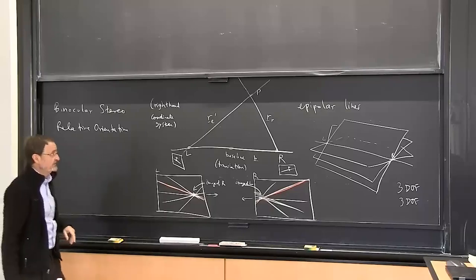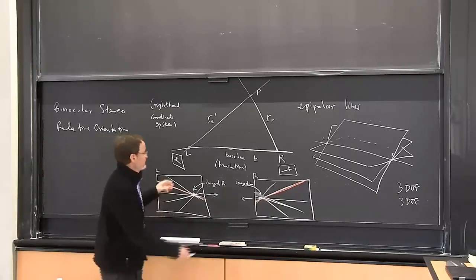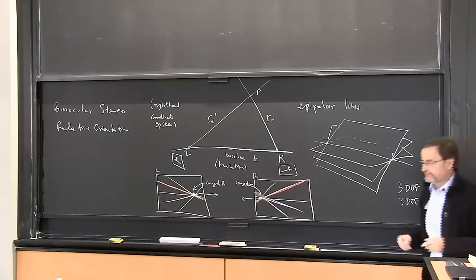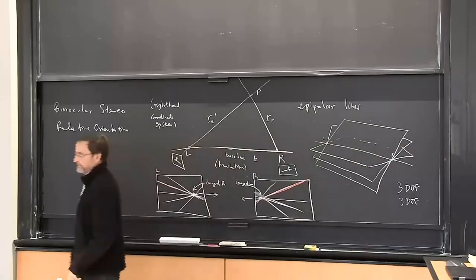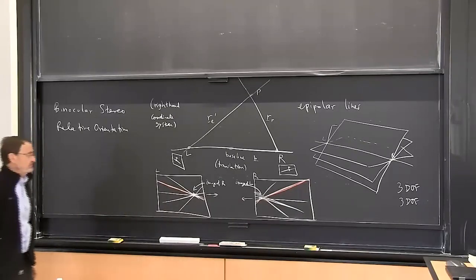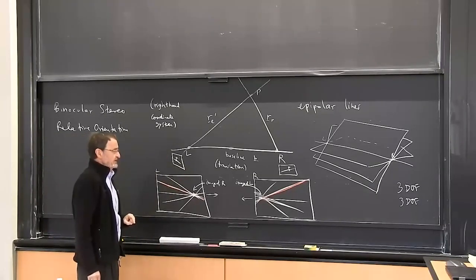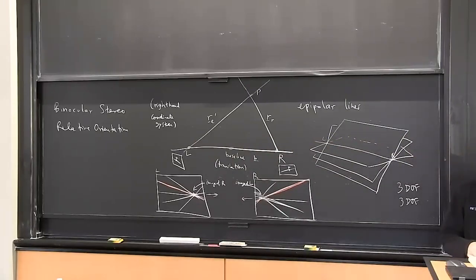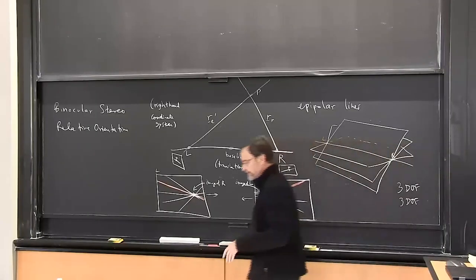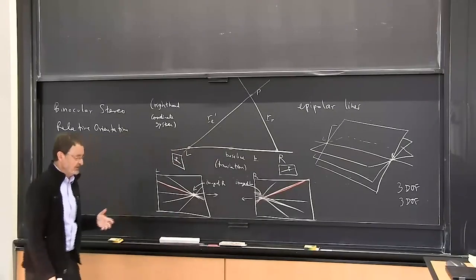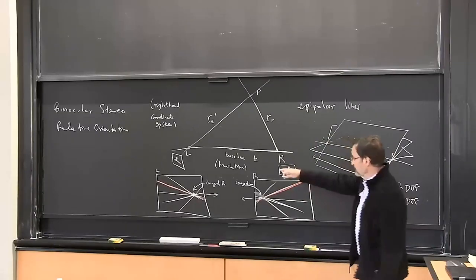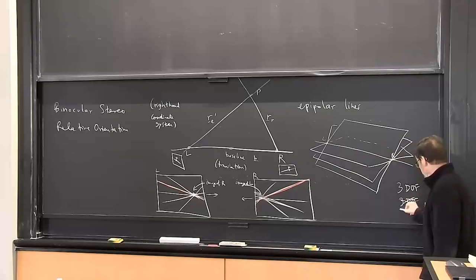But it isn't quite, because of the scale factor ambiguity we talked about. If you take the whole world and expand it by some arbitrary factor, the image positions won't change — in perspective projection we're dividing X by Z, and if you expand both, the result doesn't change. So from the binocular situation, we can't get the absolute length of the baseline without some additional information. We have to treat the baseline as a unit vector, so we only have two degrees of freedom for that component — a total of five degrees of freedom.